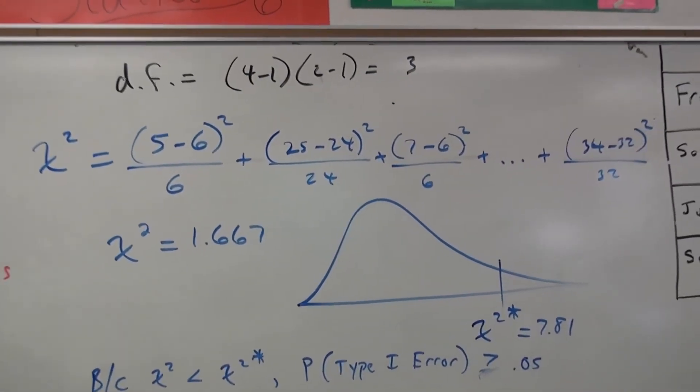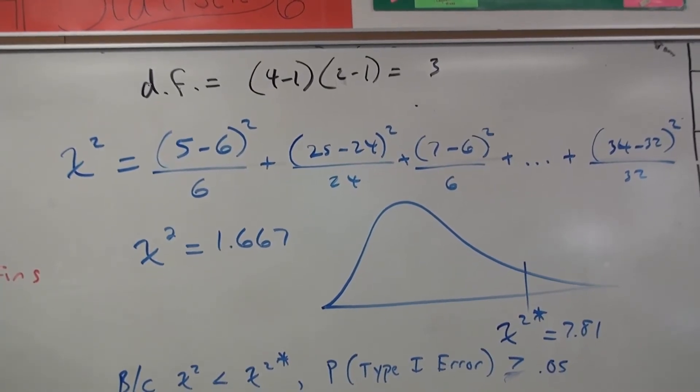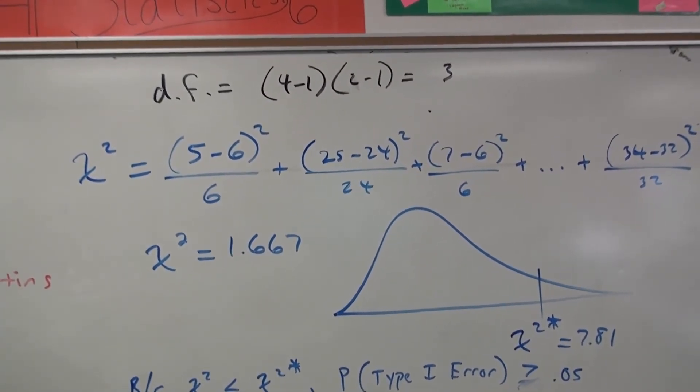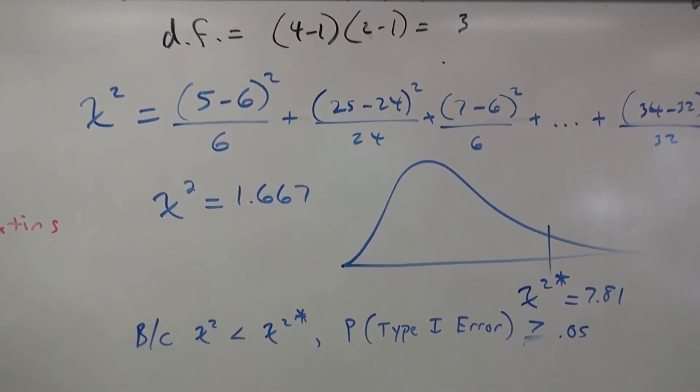Here's our chi-squared work. Show a few of the cells so the AP reader knows you know what you're doing: observed minus expected, squared, divided by expected. Add them all up. We get a chi-squared of 1.667.